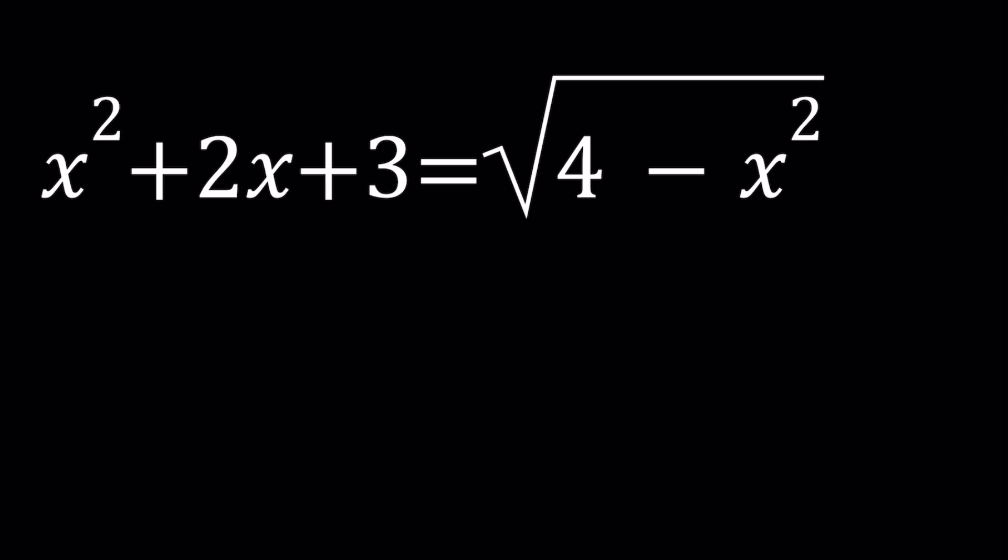So we have this equation x squared plus 2x plus 3 equals the square root of 4 minus x squared and we're going to try to find the x values. Now why did I say that? Let's explore. First of all, I'd like to give you two methods and the first method may not be complete. Let's get started.